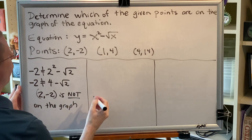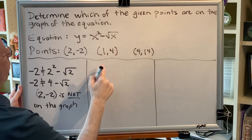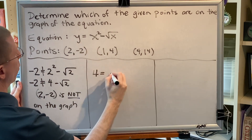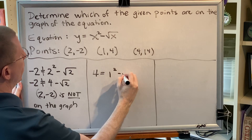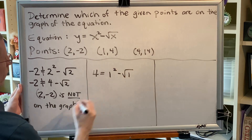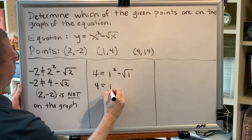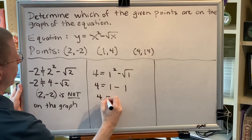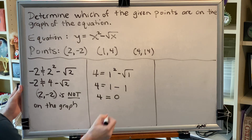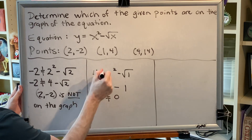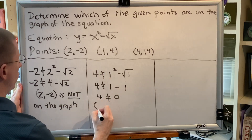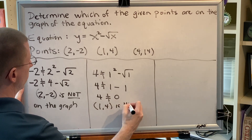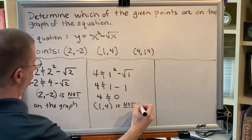Let's try our next point: (1, 4). Replace each x with 1 and replace y with 4. We get 4 equals 1 squared minus the square root of 1. 1 squared is 1, the square root of 1 is 1, and 1 minus 1 is 0. These are not equal, therefore the point (1, 4) is not on the graph.